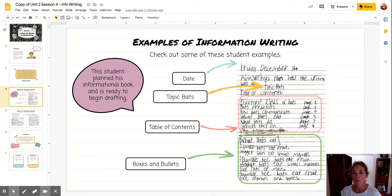First of all, he remembered to write the date and he wrote the topic. So this is sort of like the title of his book. The topic is bats. And then he's got his table of contents. So he's got his topic, which is bats, and then he's got different kinds of bats, predators, how they communicate, what they eat, and what they do, and where they live. So he's got six chapters in his book and he's going to take each one of those chapters.